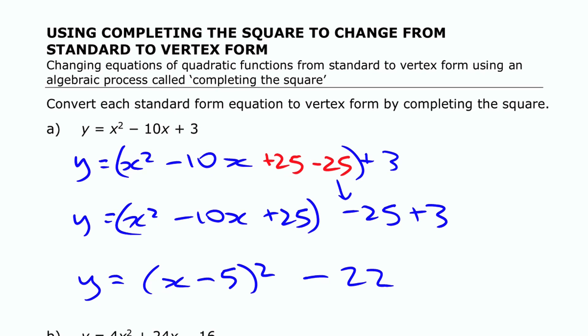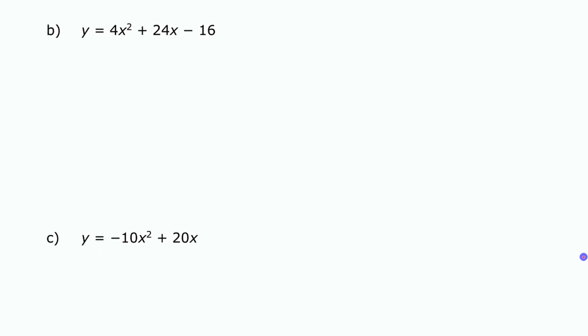All right, let's try one other one here. Now this one has a leading coefficient. What we need to do with that is it's harder to complete the square if we're trying to work with that, so the best way is to factor that out first out of these first two terms.